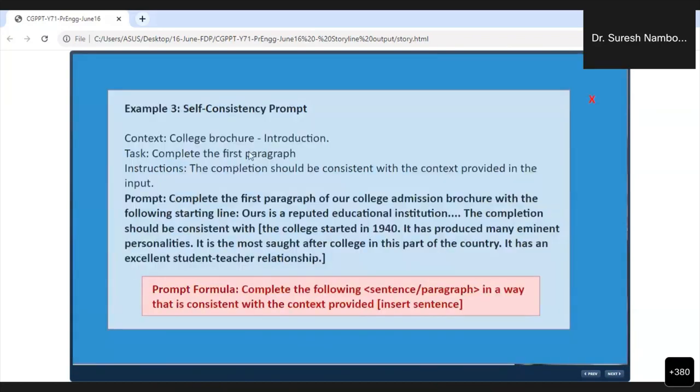Example 3 is another self-consistency prompt. This is very interesting. The context is a college brochure introduction. The task: complete the first paragraph. We can give only one sentence to ChatGPT, and we can